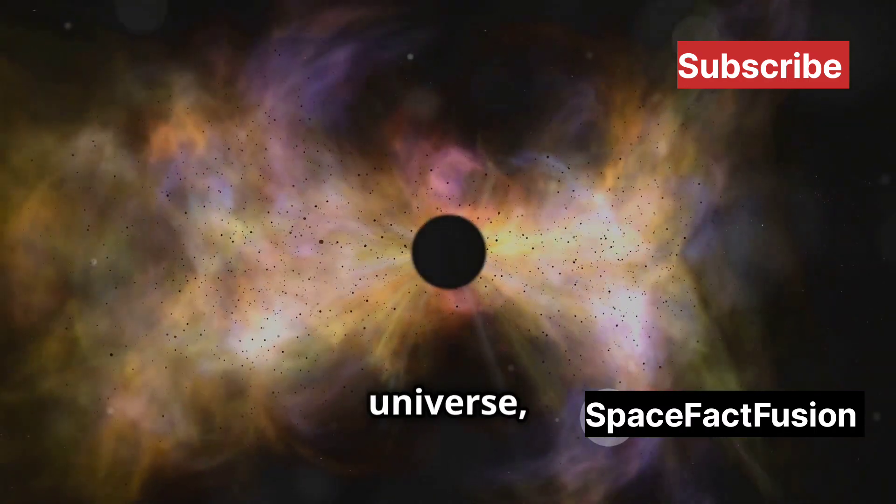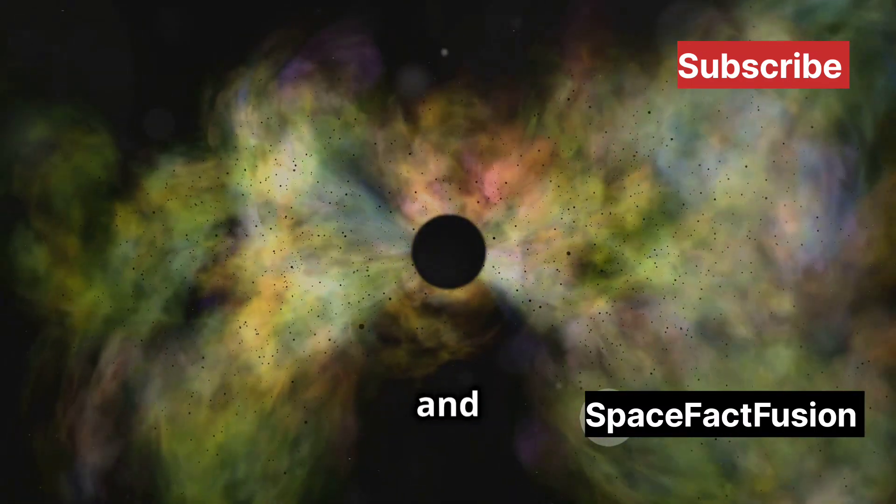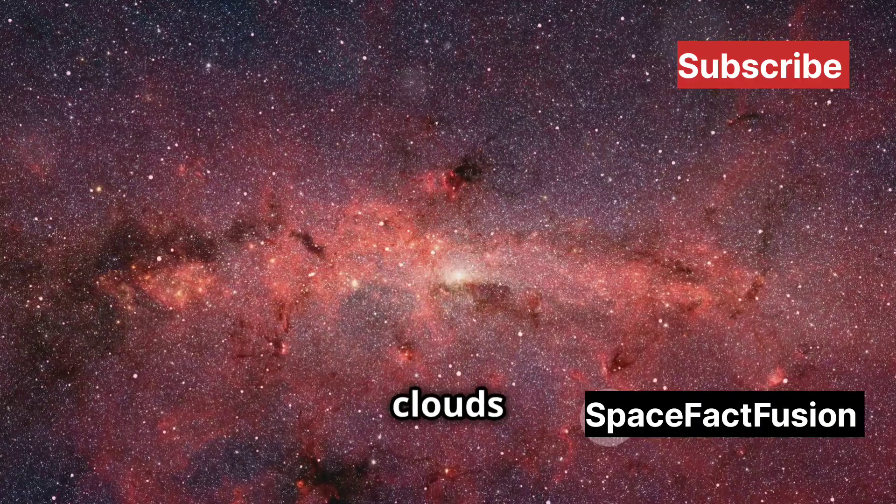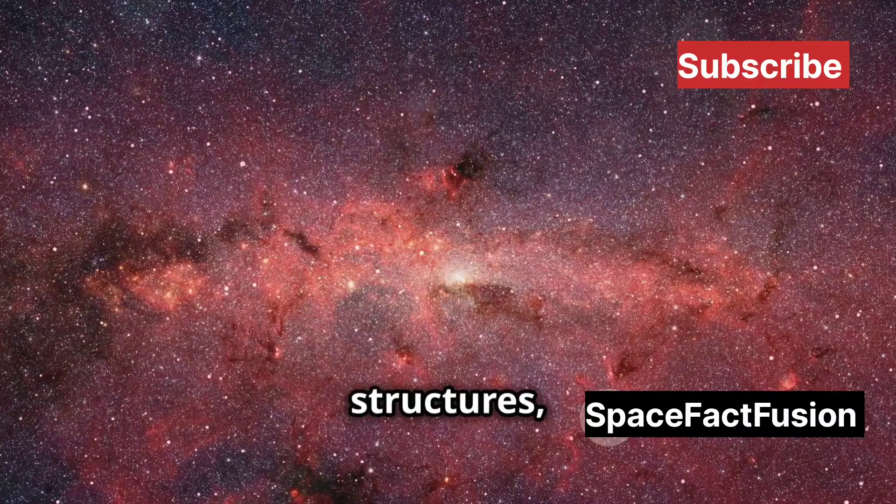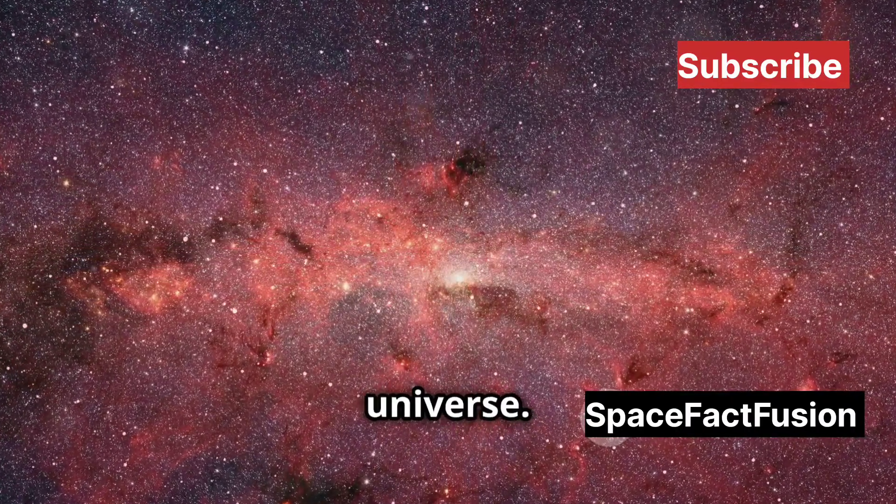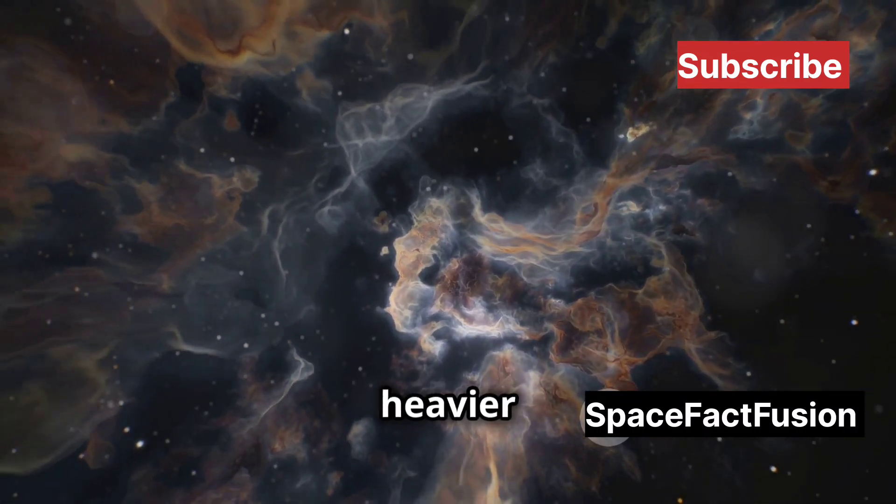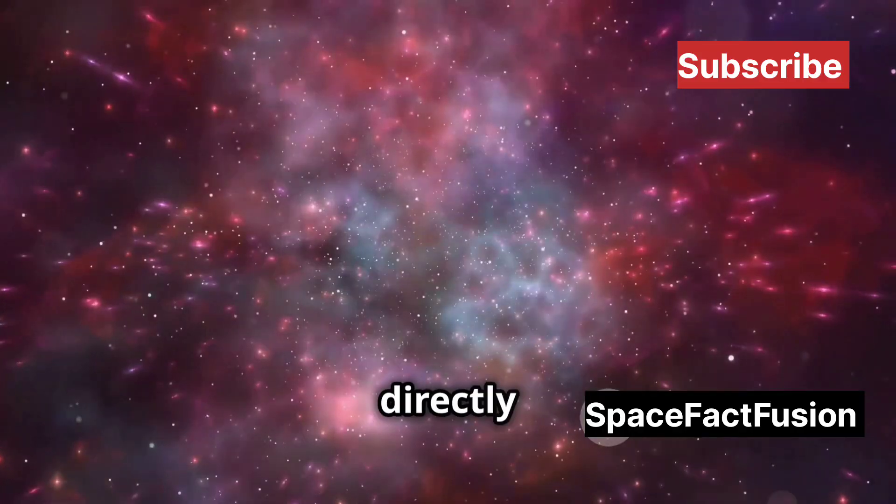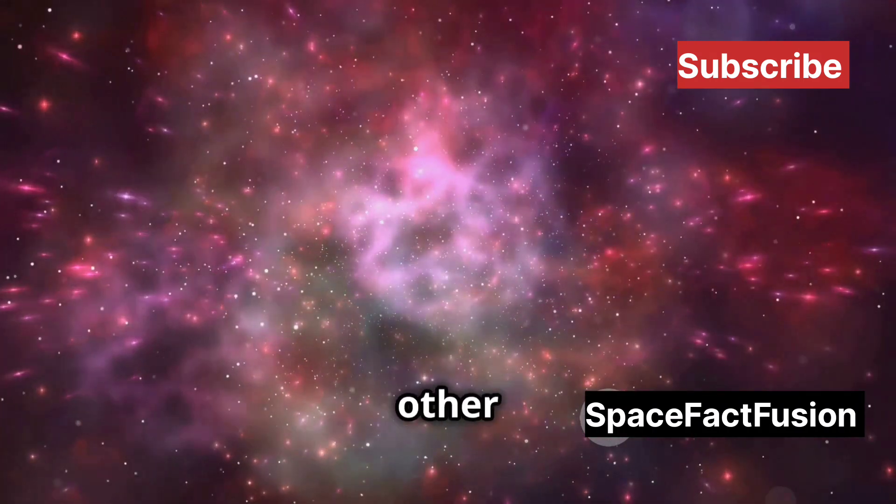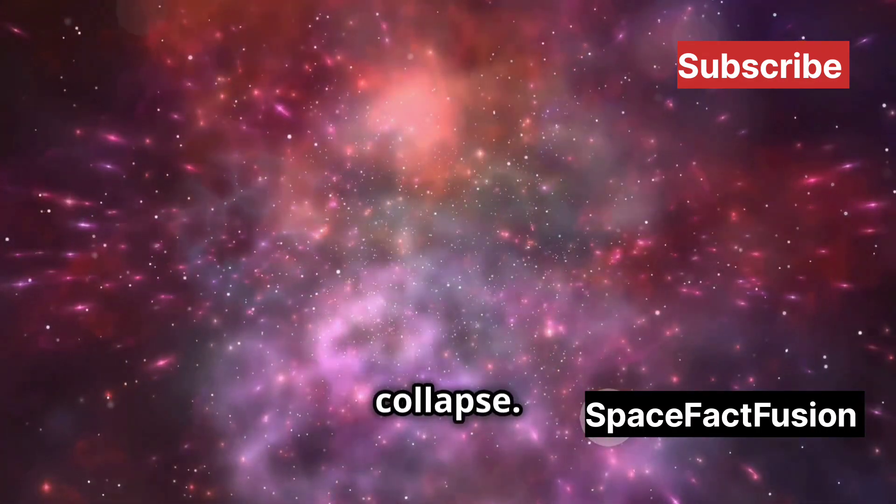In the early universe, just a few hundred million years after the Big Bang, giant clouds of hydrogen and helium gas swirled through space. These primordial clouds were the building blocks of the first cosmic structures. These clouds, pristine and untouched by the heavier elements forged in stars, could have collapsed directly into black holes. Without the presence of metals and other elements, the cooling processes were different, allowing for a more straightforward collapse.